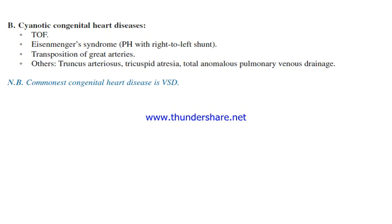Cyanotic congenital heart disease includes: tetralogy of Fallot, Eisenmenger syndrome, pulmonary hypertension with right-to-left shunt, transposition of the great arteries, truncus arteriosus, tricuspid atresia, and total anomalous pulmonary venous drainage.